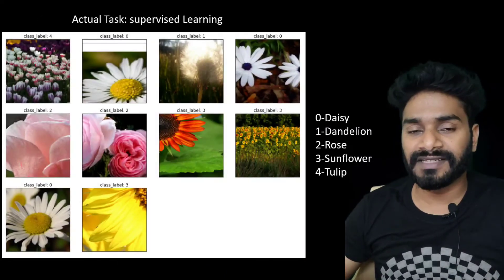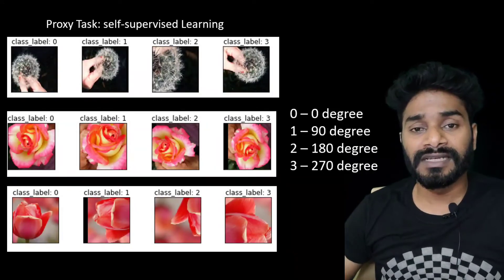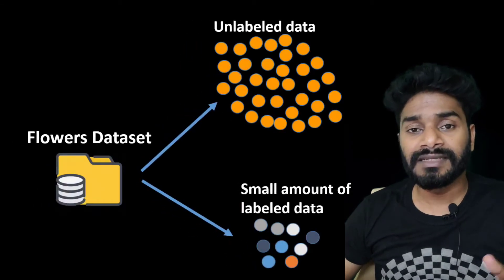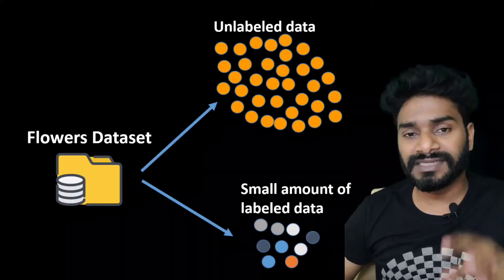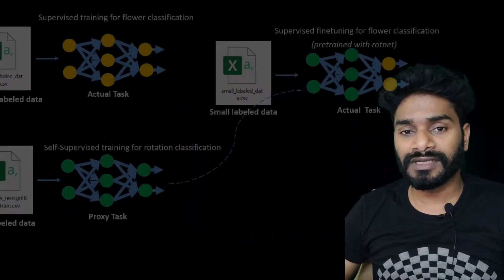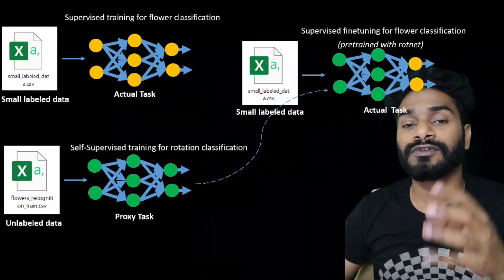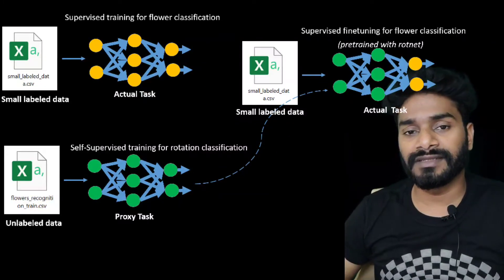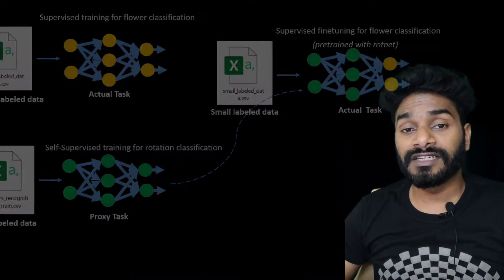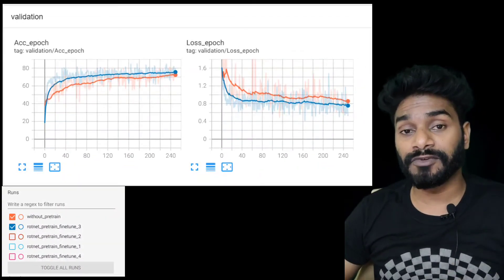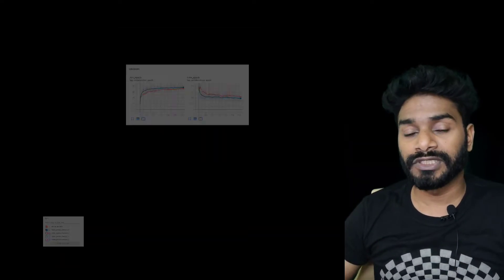In this context, we were using the flowers dataset from Kaggle, which is a five-class classification. We prepared the data loader for both supervised and unsupervised learning. We were trying to emulate the scenario when we have a good amount of unlabeled data and a small amount of labeled data. On this unlabeled data, we did self-supervised pre-training of RotNet, then fine-tuned on the small labeled dataset for flower recognition. We already observed that pre-training improved the results compared to not doing pre-training.